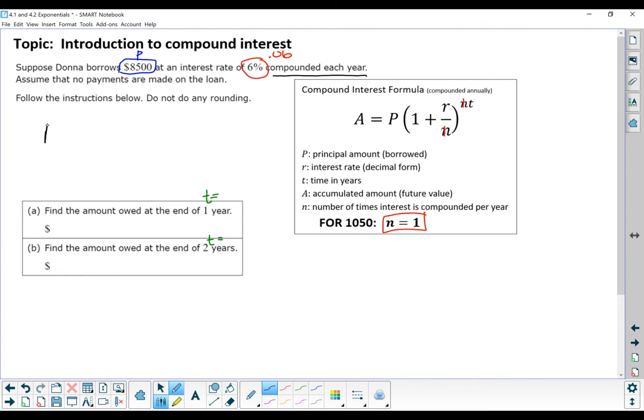So our equation looks like 8,500 multiplied by 1 plus 0.06 to the power of T. For this first part A, T is going to be 1, which gives us $9,010. This says do not do any rounding. And then for the second one, we're going to sub in a 2 for the power. In that case, we get after 2 years, it would be $9,550.60. Again, it said do not round, so I put in my full answer as is.